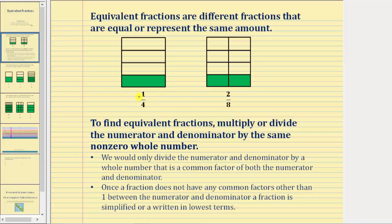The fraction one-fourth is using a larger piece to represent the amount, and the fraction two-eighths is using smaller pieces to represent the amount, but the amount is the same.